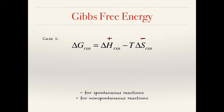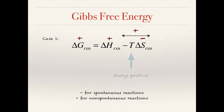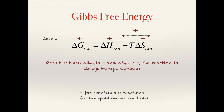Case one is where we have an endothermic reaction and a negative entropic value. The temperature is always going to be positive because it's in Kelvin, which starts at 0K. If ΔS is negative, it follows that minus TΔS must be positive, and the sum of ΔH and TΔS is going to be positive. There's no way for ΔG to be negative here, so ΔG is always positive and the reaction is non-spontaneous at all temperatures.